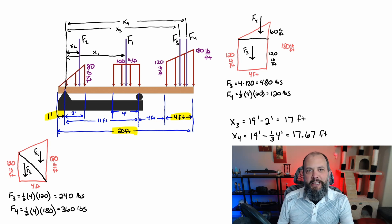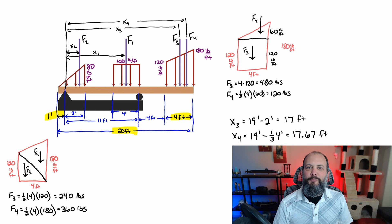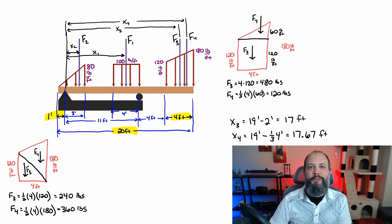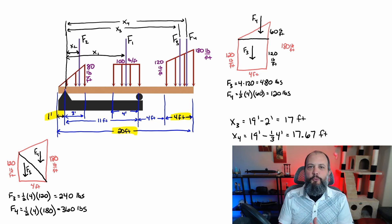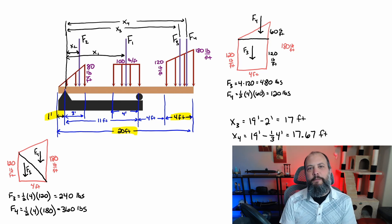And X4, which is the location of F4, which represents the triangle stacked on top of the rectangle. Remember, the centroid of a triangle is one-third of the base of the triangle, and it's going to be closer to the tall side of the triangle. So one-third of 4 is 1.33. 19 minus 1.33 gives 17.67 feet for X4.